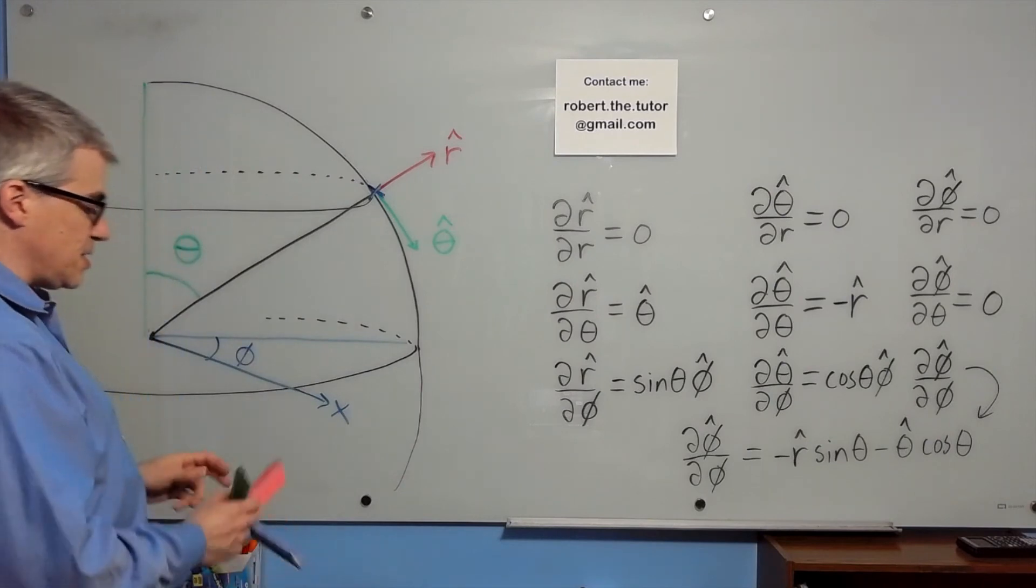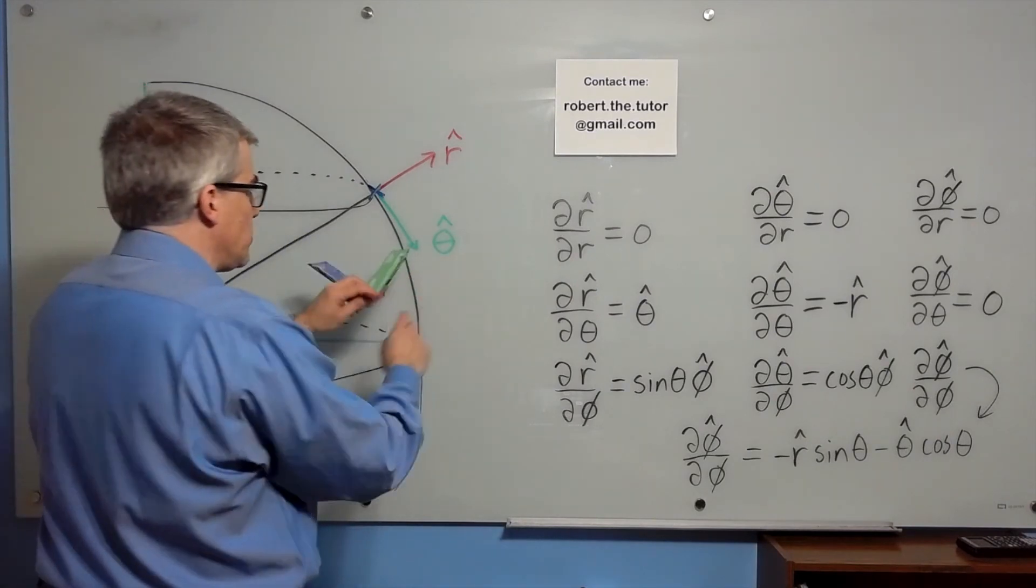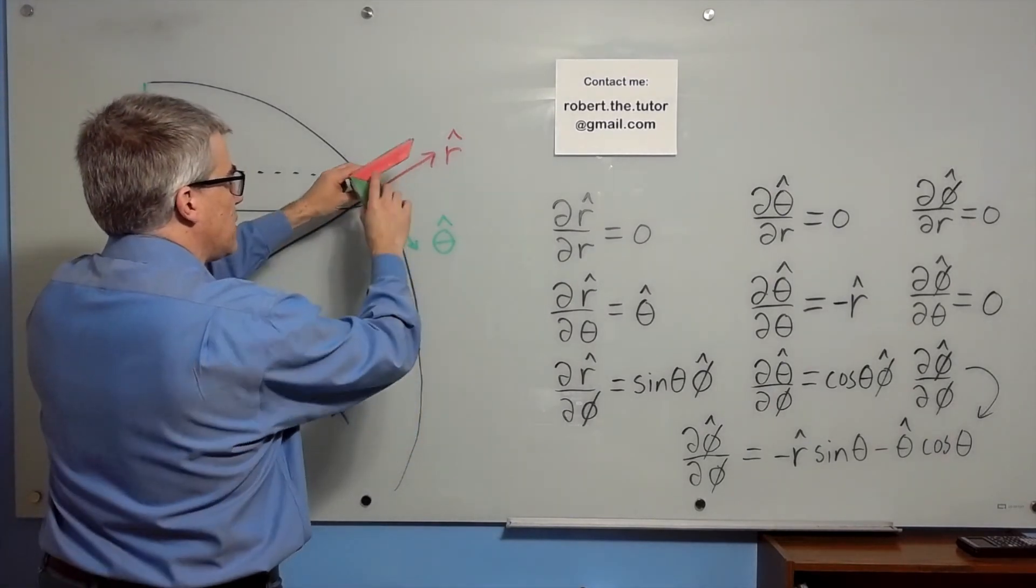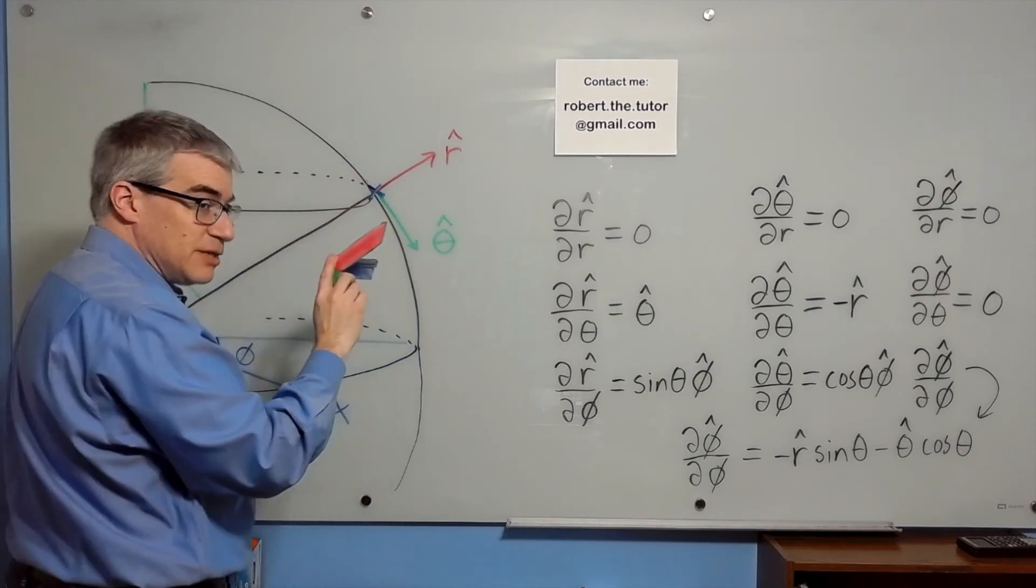It's a right-handed coordinate system, so red, green, blue. Red is that way, green is that way, so blue is, in fact, into the board, as I have drawn.